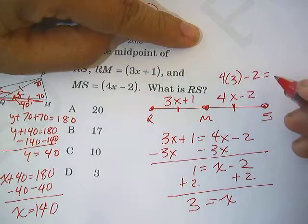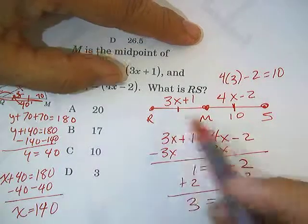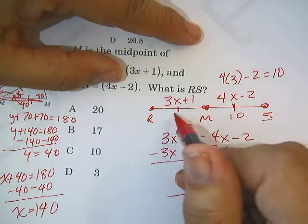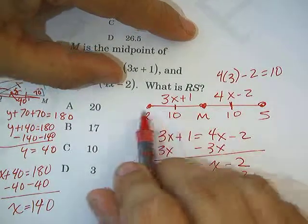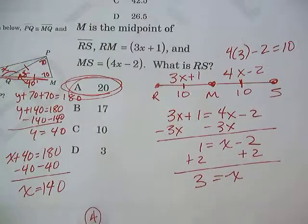So if this side is 10, and let me check here. 3 times 3 plus 1, that's 10. That makes sense. That's good. They should be equal. The whole thing is 20. RS equals 20.